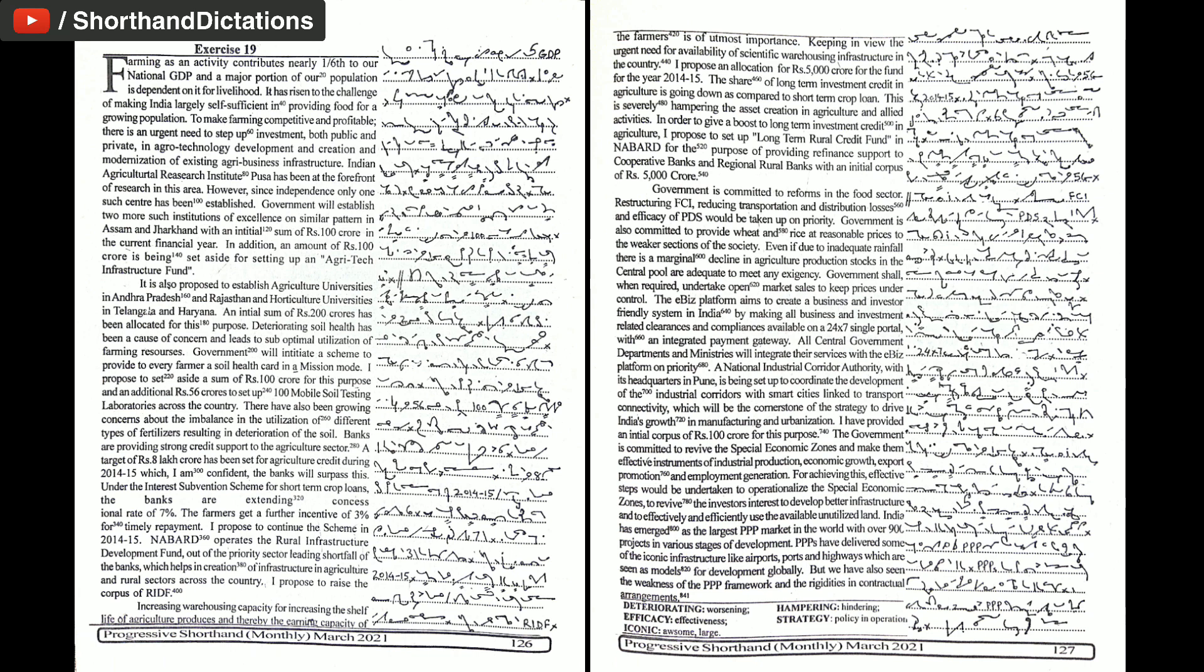This is severely hampering the asset creation in agriculture and allied activities. In order to give a boost to long-term investment credit in agriculture, I propose to set up long-term rural credit fund in NABARD for the purpose of providing refinance support to cooperative banks and regional rural banks with an initial corpus of Rs. 5,000 crore.